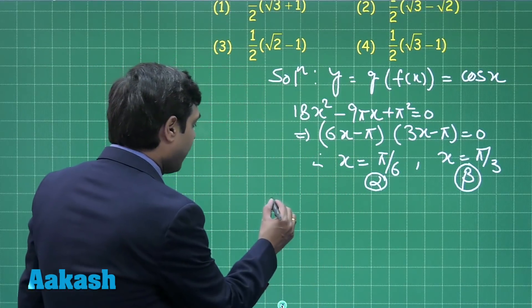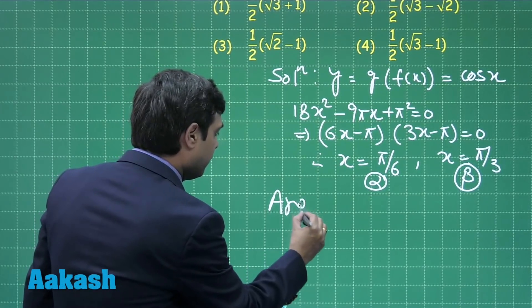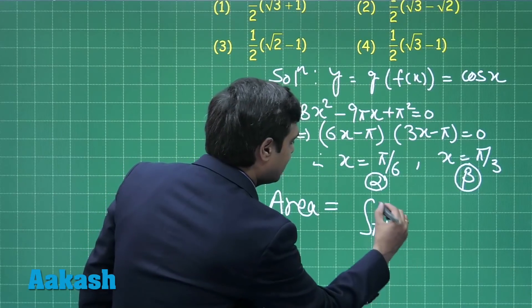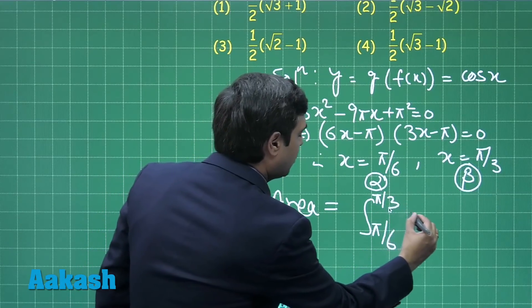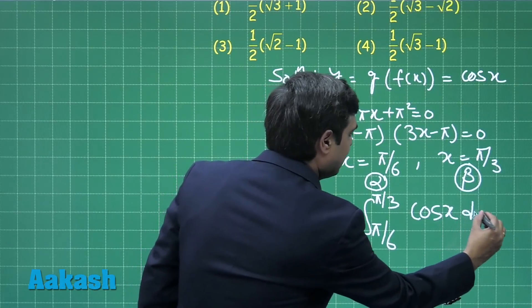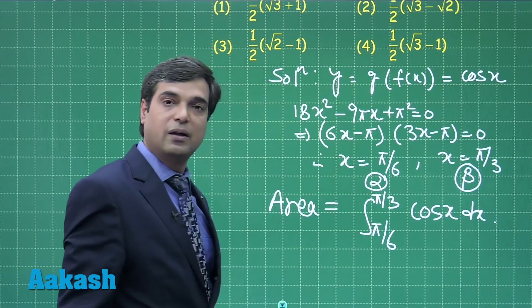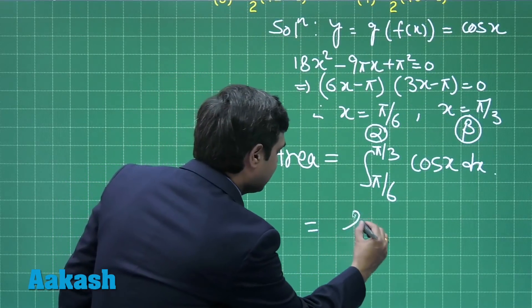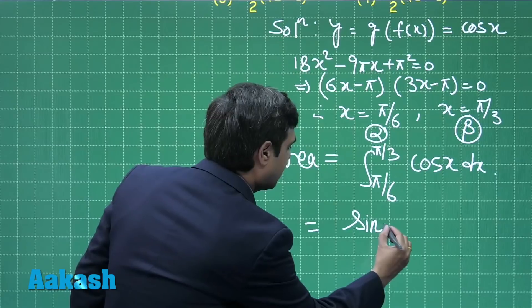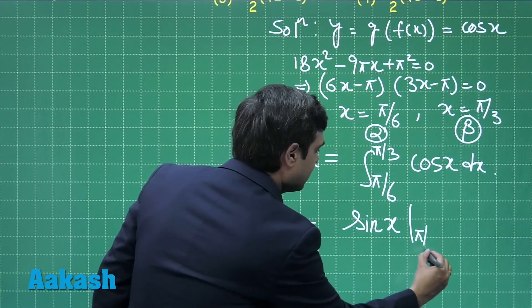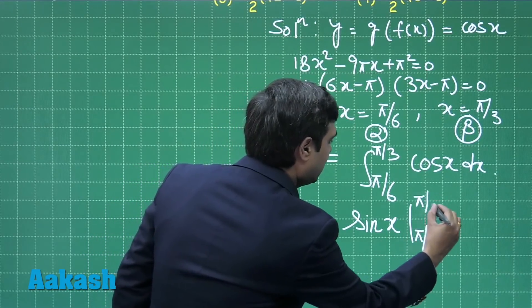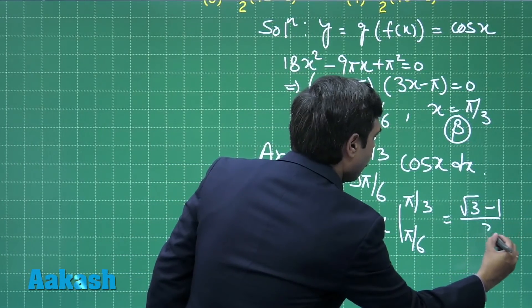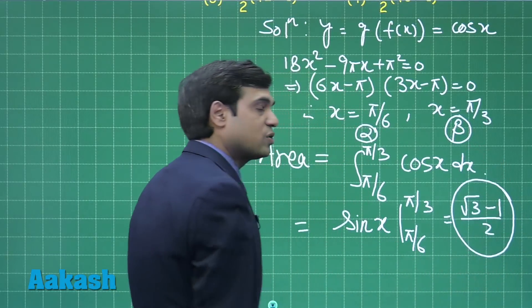The question says simply find the area, which will be integral pi by 6 to pi by 3 of cos x dx. Integrating, we have equals sin x from pi by 6 to pi by 3, or this is equal to root 3 minus 1 whole divided by 2 square units.